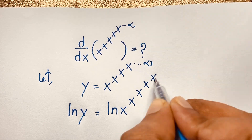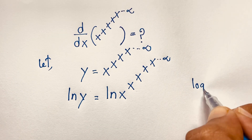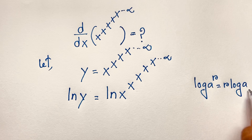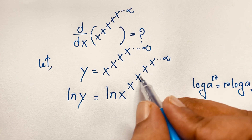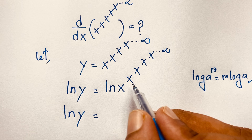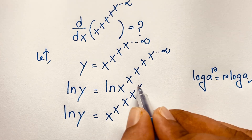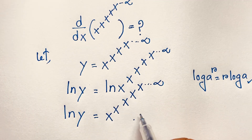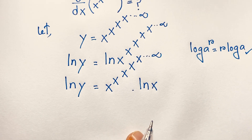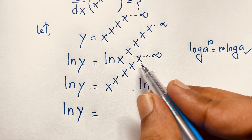According to the logarithm power rule, log of a to the power r equals r times log a. Using this exponential formula, we move the exponent to the front. So ln y equals x to the power x to the power x — continuing to infinity — times ln x. Since the full tower is just y, we substitute it back.